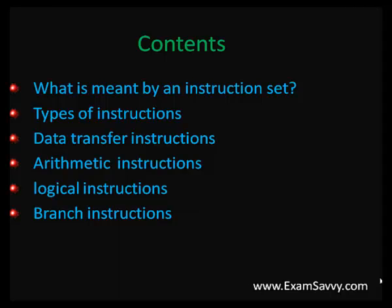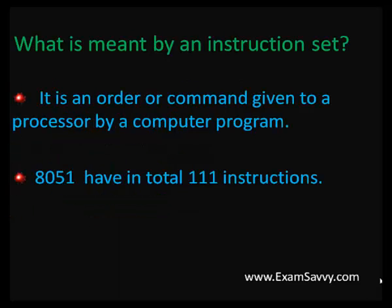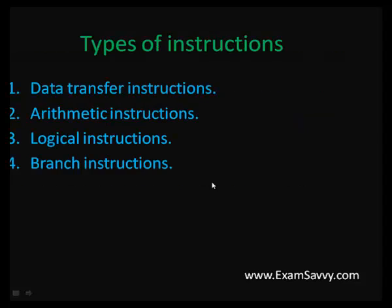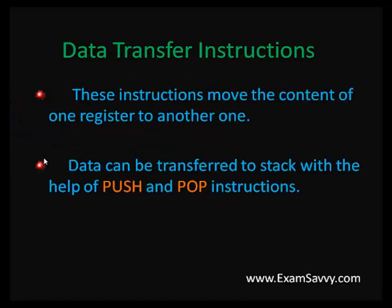The contents in this video cover the instruction set and its types. An instruction is an address in which data is entered. An instruction set is a command or order given to a computer as coding. In 8051 we have a total of 111 instructions. The four types of instruction sets in 8051 are: data transfer, arithmetic, logical, and branch instruction.